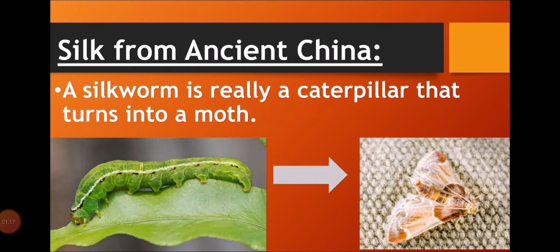Now today we are going to start about silk from ancient China, which is on textbook page 75. Silk is basically a cloth made in China using a technique that is 5,000 years old, known only by the Chinese people. They made this silk with the help of a little insect known as the silkworm, and this technique was not known by many people around the world.